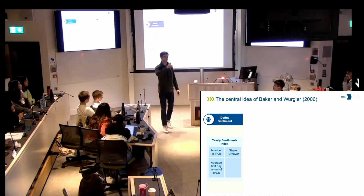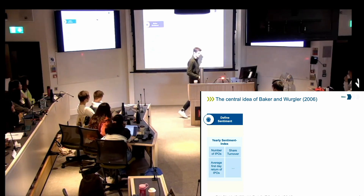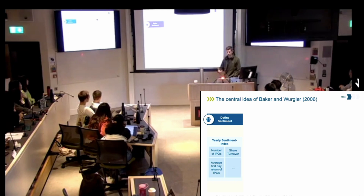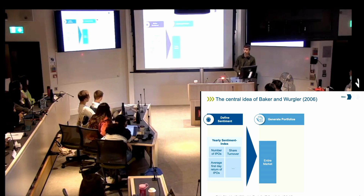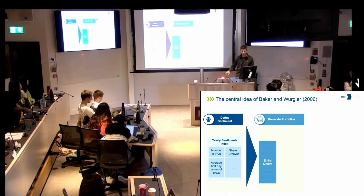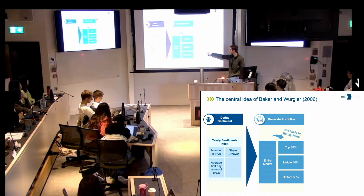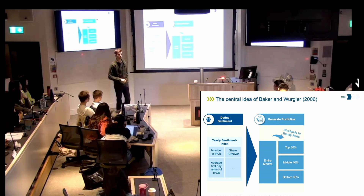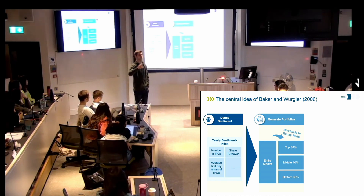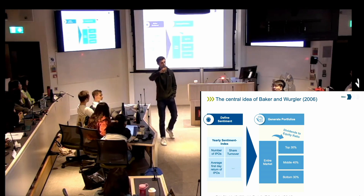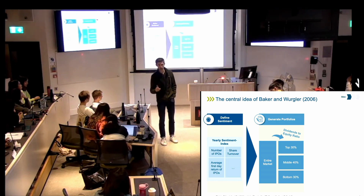A very intuitive measure is share turnover. If many people buy shares in a given year, we say people are excited about shares — higher share turnover tells us that investors feel better. Another number they put into the index is related to IPOs. They have six factors in general, but it's the same concept. When we have defined sentiment, we also need to define portfolios where we can look at returns. They look at all stocks traded on the New York Stock Exchange and divide them into three parts using the dividend-to-equity ratio, giving us the top 30% and bottom 30% portfolios.